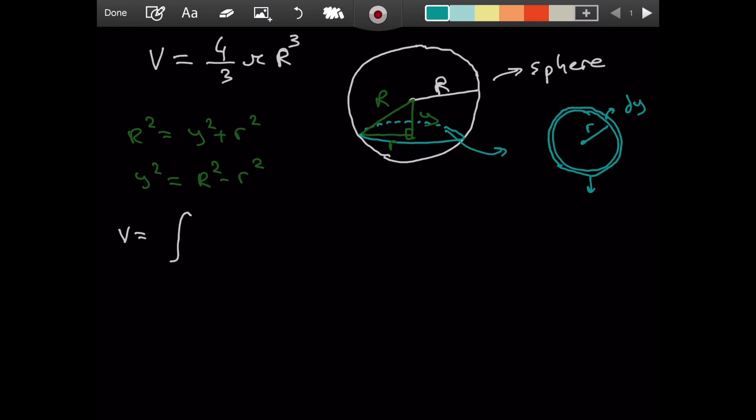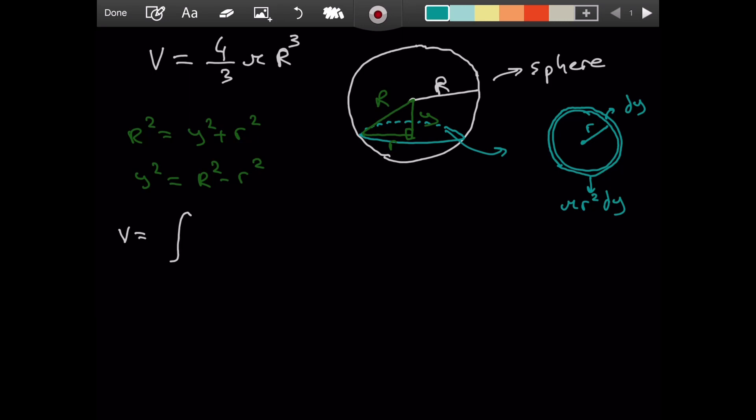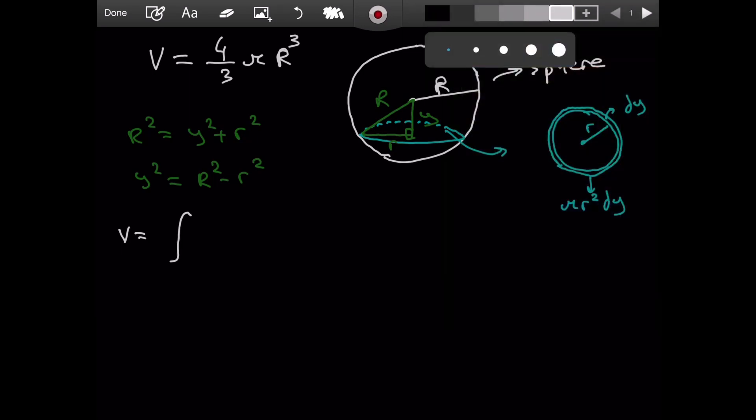Well, it will be the circular area, which is pi r squared. And I also have a video where I derive pi r squared, you can find it from the cards. So, it is pi r squared, the area of the circle, times dy, the width, to give an infinitesimal volume. So far so good. So, we write pi r squared dy.